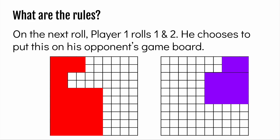On the next roll, Player 1 rolls 1 and 2. He chooses to put this on the opponent's game board. He does this in an attempt to make it harder for his opponent to be able to place rectangles on their own game board.